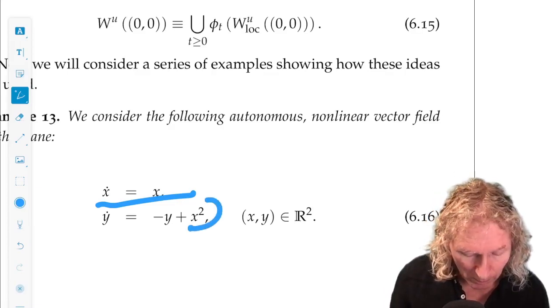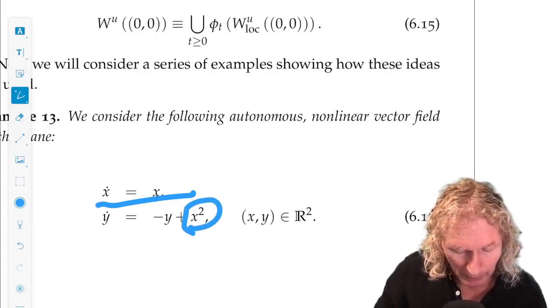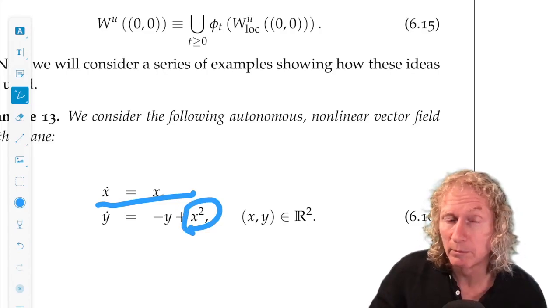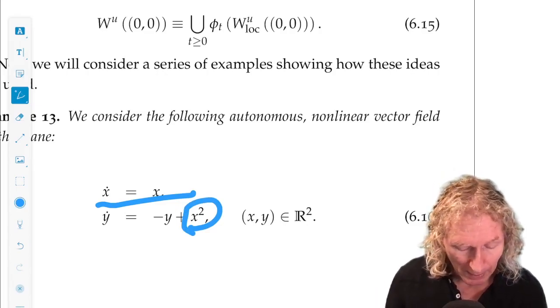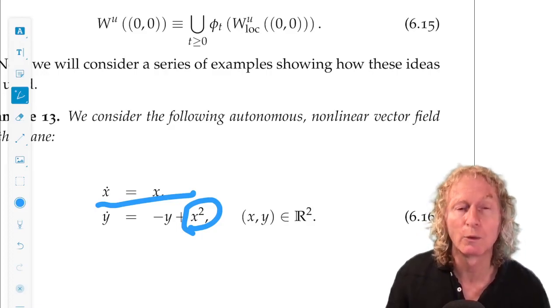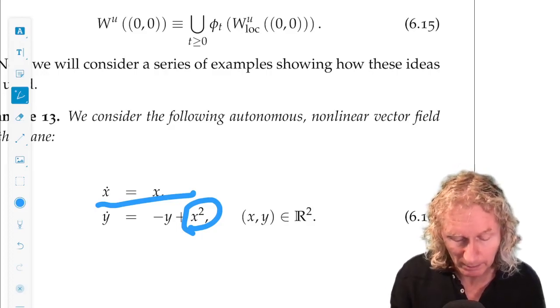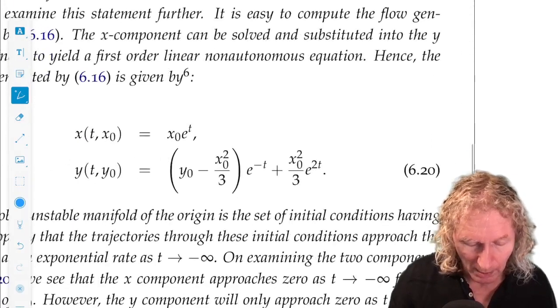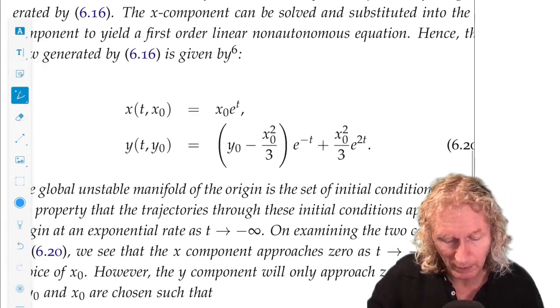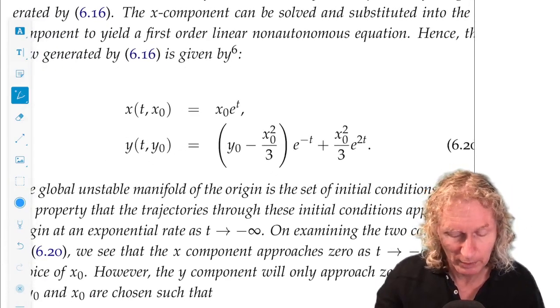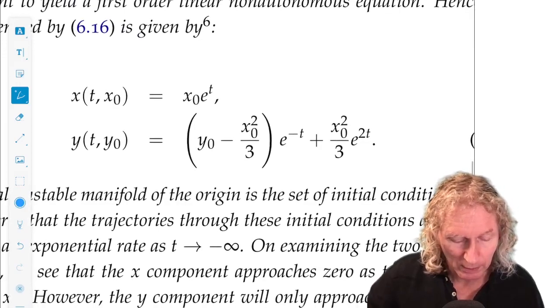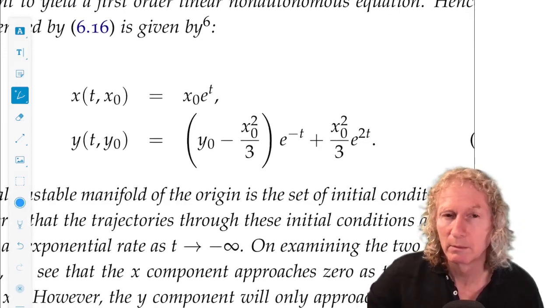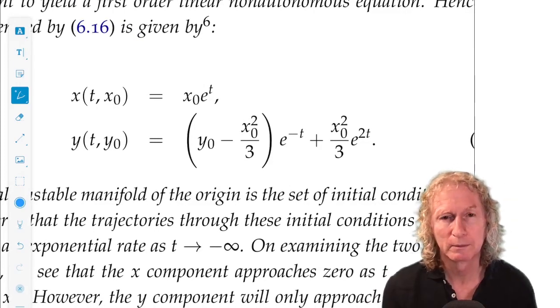Plug that into this expression. We would get x naught squared e to the 2t. And we would have y dot equals minus y plus some function of t. We can also solve that analytically. And these are the trajectories that you get. So, these are the trajectories that at time zero, give you x naught and y naught.